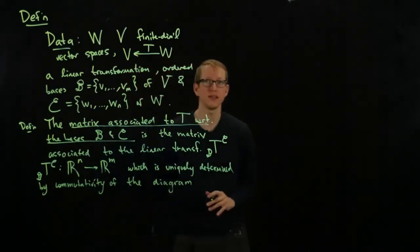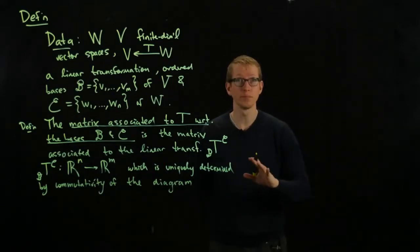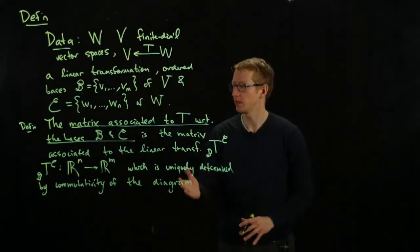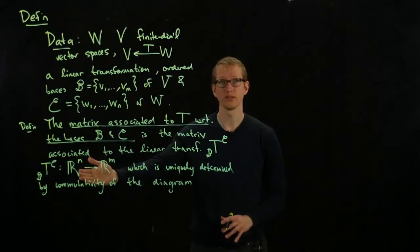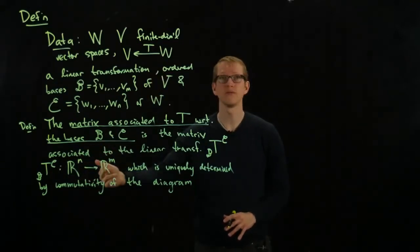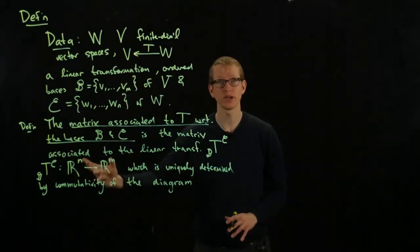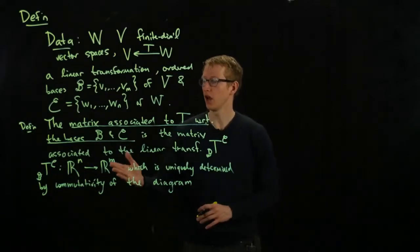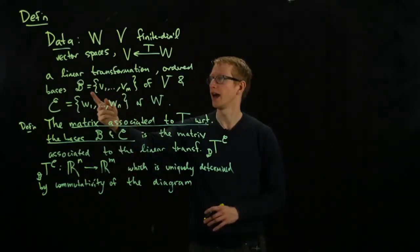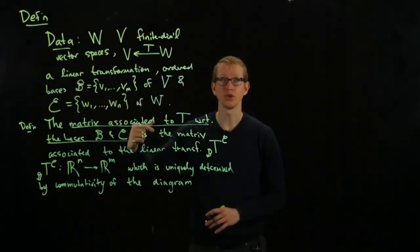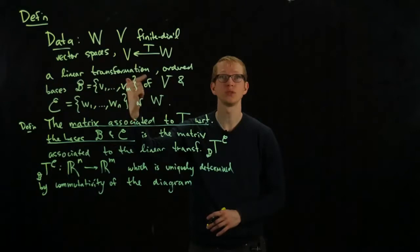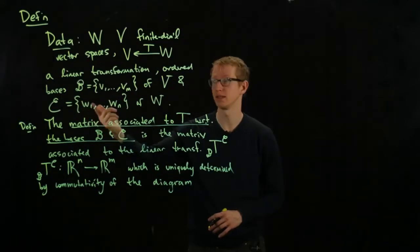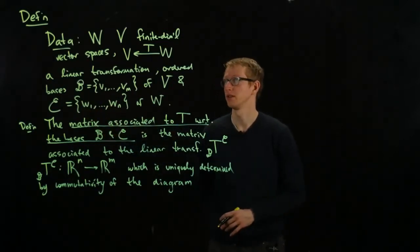And this is a linear transformation. Let me rewrite it actually here. It's a linear transformation from R^n to R^m, which is uniquely determined by commutativity of the following diagram. So what this diagram does is, I'm not even going to write it yet. I want you to think about what I could possibly think of writing. I have a transformation from W to V. I'm telling you that there's a construction from a vector space that has the same dimension as W to a vector space that has the same dimension as V, but these are very special vector spaces. These are specifically the Euclidean vector spaces. And associated to this choice of basis, I can send V_1 to E_1, the unit vector in R^m, and V_2 to E_2, and so on, V_m to E_m.